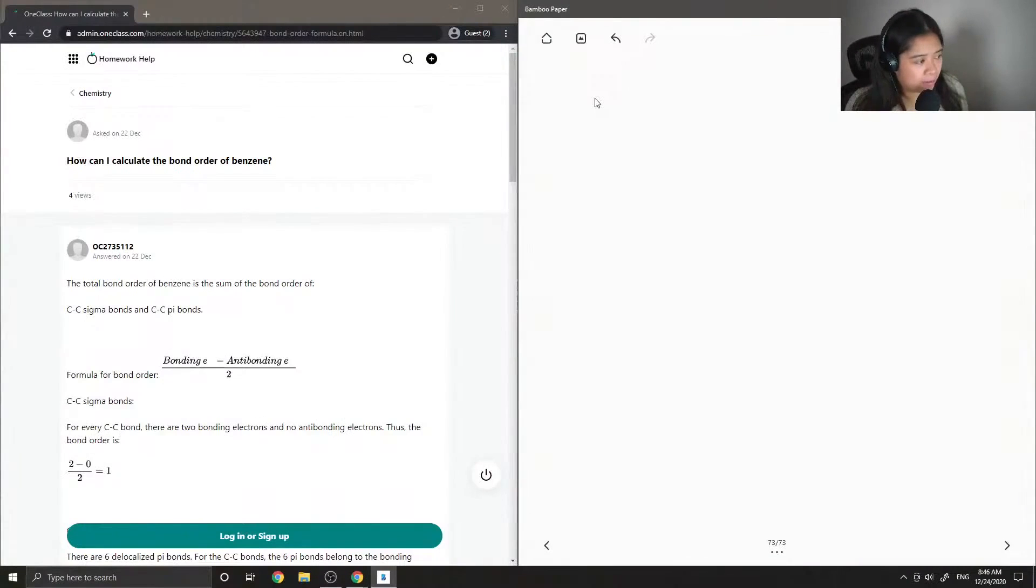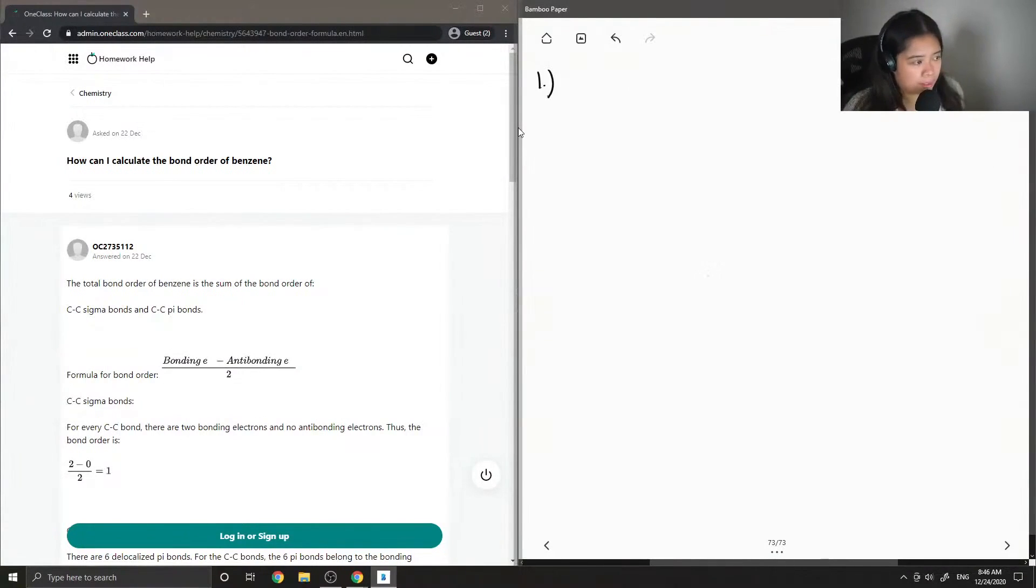Question one asks, how can I calculate the bond order of benzene? First I'll just draw out the benzene molecule. It is a six-membered carbon ring and it is also aromatic. We can tell that a molecule is aromatic when most of the time there is a double bond in between every other atom like this carbon. And each carbon contains a hydrogen as well. You can see that this molecule contains both single and double bonds.